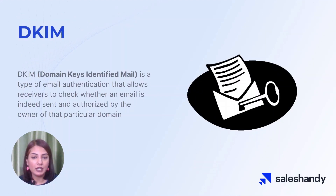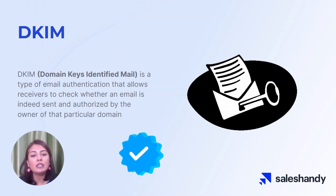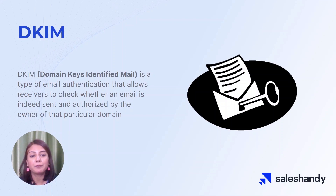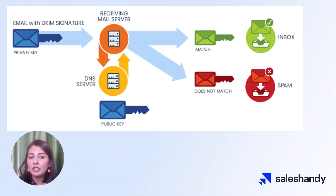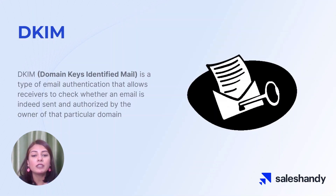The first one is DKIM. One way to authenticate your emails is by using DKIM, or Domain Keys Identified Mail. This system allows ESPs to verify that an email was actually sent by the owner of the domain it claims to be from. When you send an email, a special digital signature is added to the message header. The recipient's mail server can then check this signature against a public key stored in the domain's DNS records. If the signature matches the key, the email is considered authentic and is delivered to the recipient's inbox. If you're a business or organization that sends a lot of emails, it's definitely worth setting up DKIM to gain ESPs' trust.